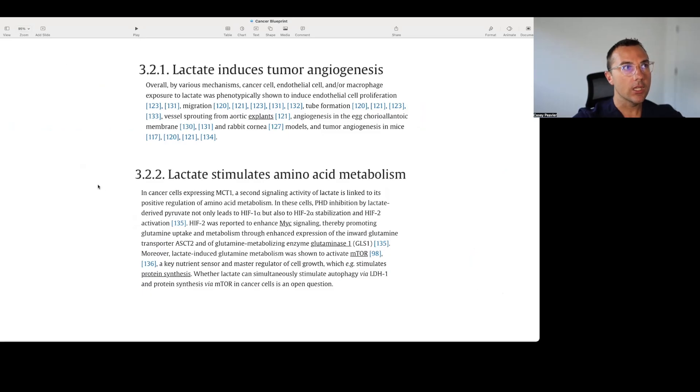How does it do it? Lactate induces tumor angiogenesis overall by various mechanisms, cancer cell, endothelial cell, or macrophage. Exposure to lactate was phenotypically shown to induce endothelial cell proliferation, migration, tube formation, vessel sprouting from aortic explants, angiogenesis in the egg chorioallantoic membrane, and rabbit cornea models, and tumor angiogenesis in mice. Also, lactic acid stimulates amino acid metabolism. We'll talk about this in the future.